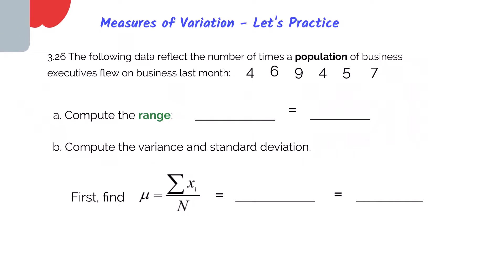So here is problem 3.26, and the data here reflects the number of times a population of business executives flew on business last month. Since this is a small company and it only has six executives, that's why it would be considered a population because that's all the executives we have in the company.